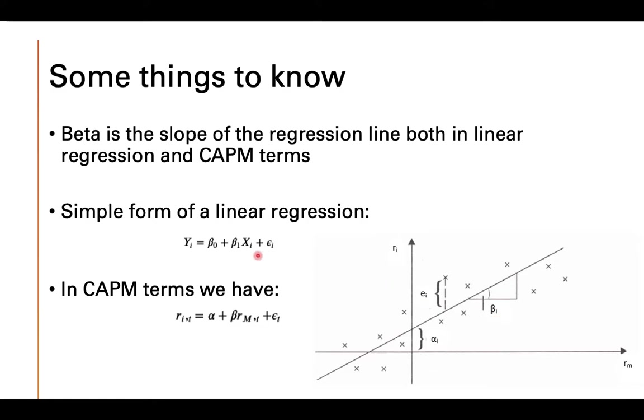If we are taking a look at a simple form of a linear regression, we are seeing the dependent variable is defined as the intercept plus the predictor variable plus the error term, which is nothing else than the distance between the observed variable and the predicted variable, which is on this line here.